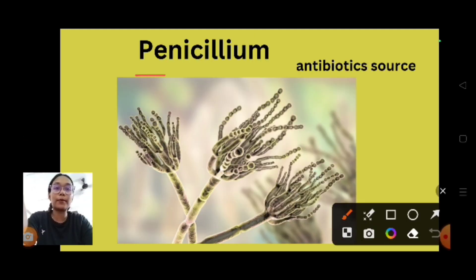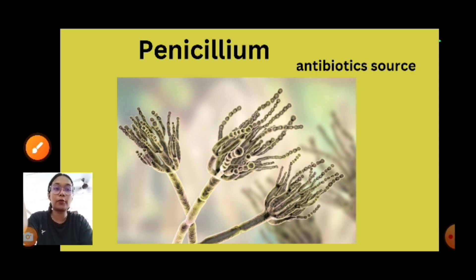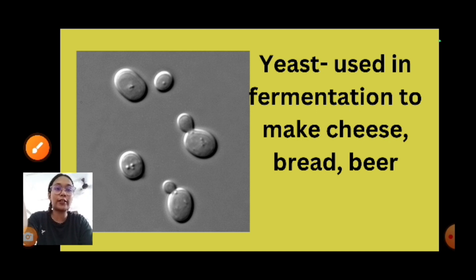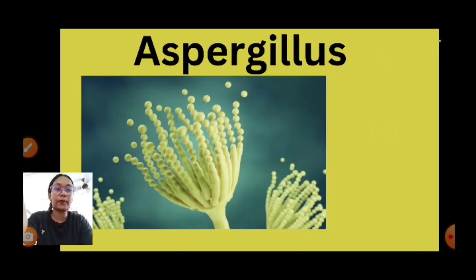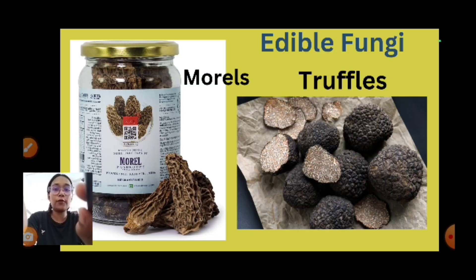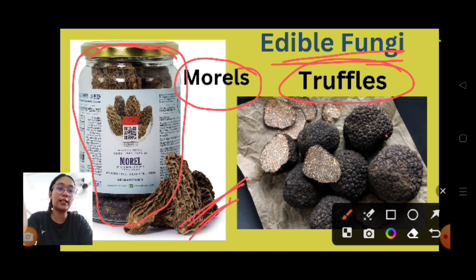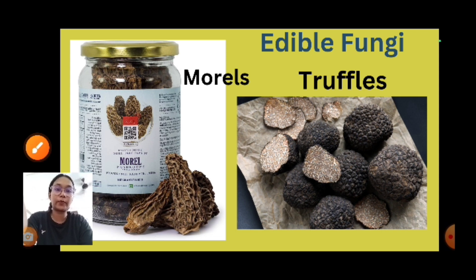Penicillium is used to make antibiotics — it is a source of antibiotics. Yeast is used in households for making cheese, bread, beer, and cakes through the process of fermentation. Aspergillus is another example. Morels and truffles are edible fungi belonging to the class Ascomycetes.